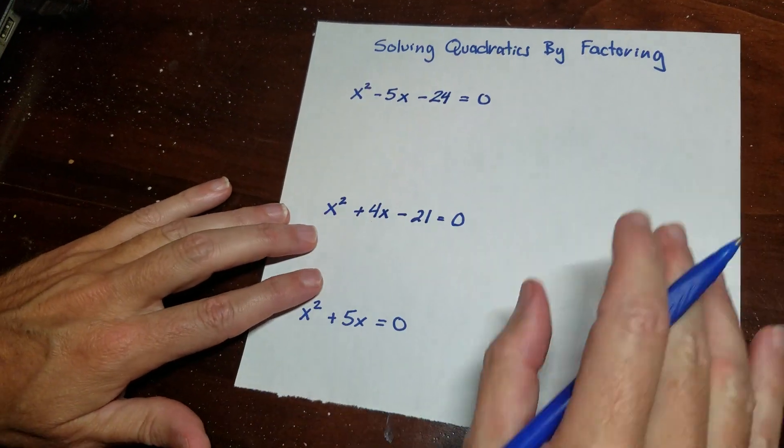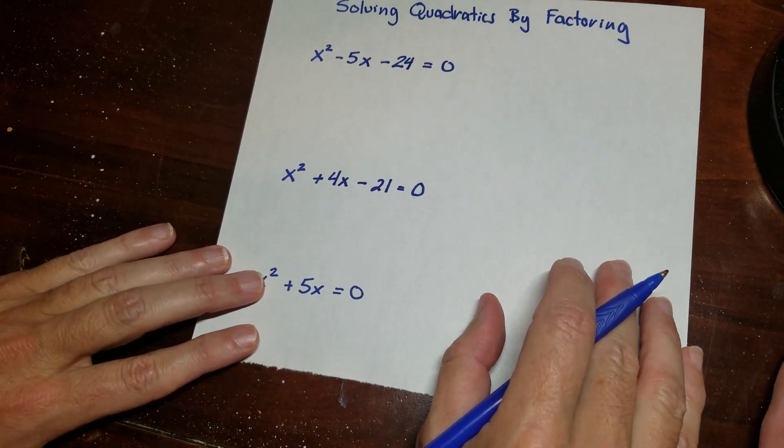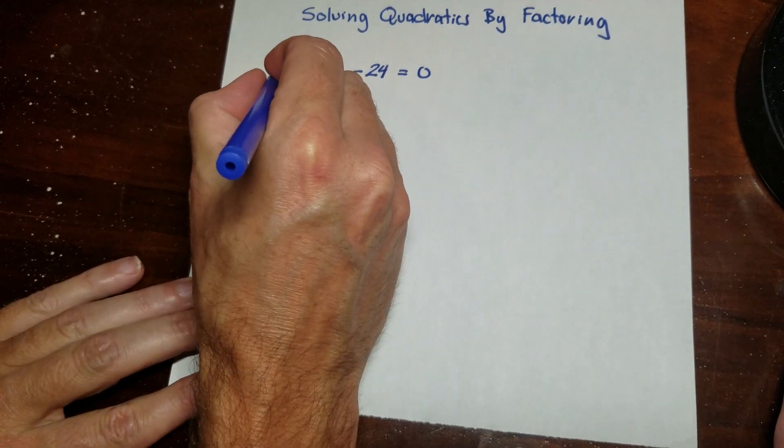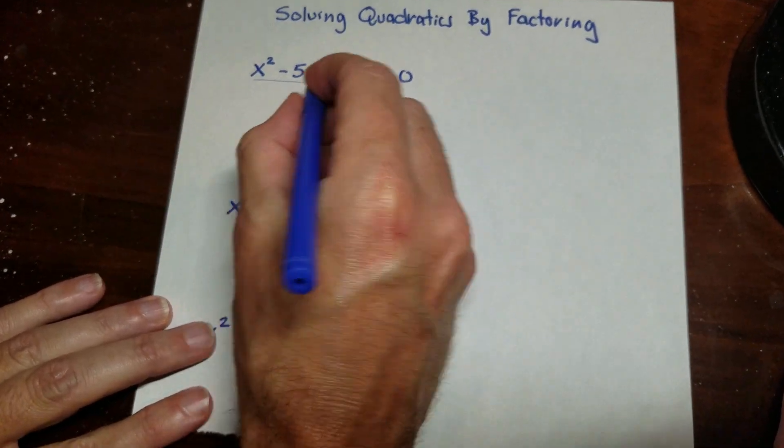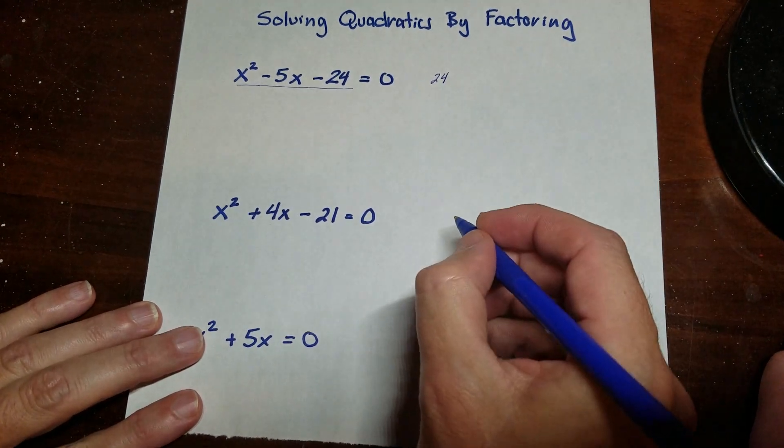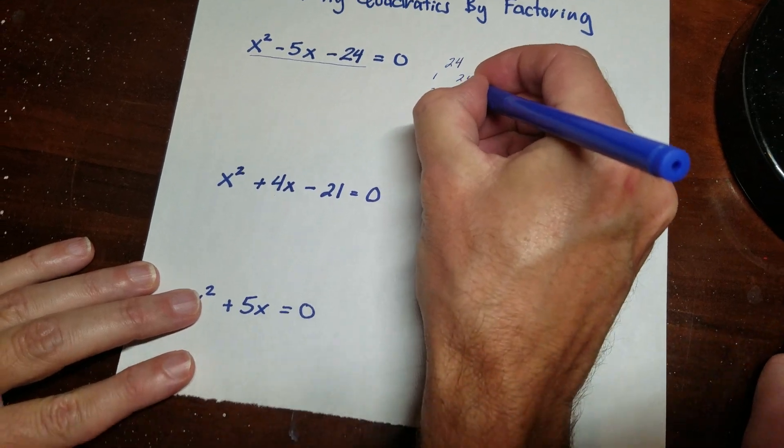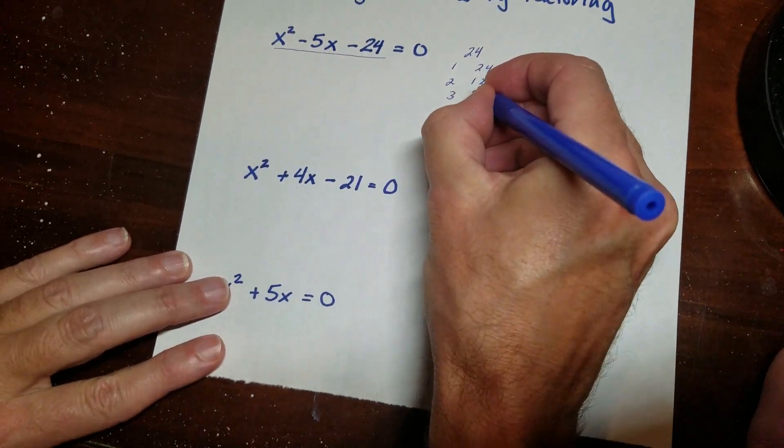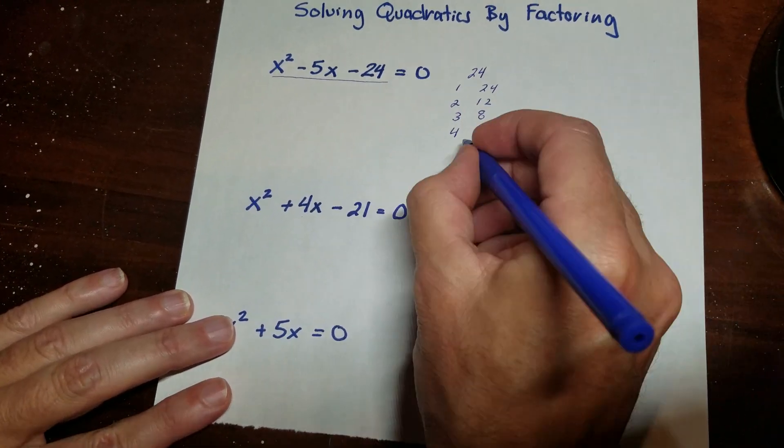So what we're going to talk about today is how you do that. And so this is solving quadratics by factoring. We've been working on factoring. So I'm going to factor this. I'm going to start with figuring out what the factors are. So I write 24. I have 1 and 24, 2 and 12, 3 and 8, 4 and 6, and then 5 doesn't work.